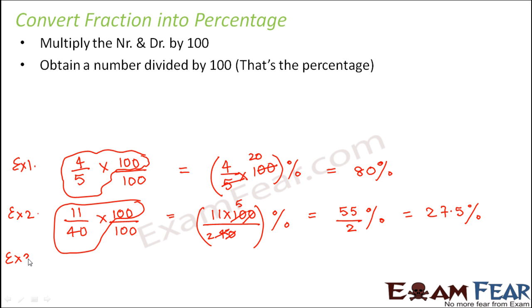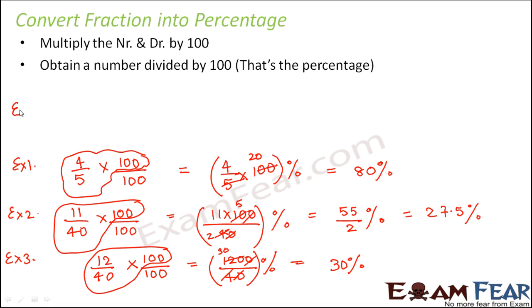Let's look at yet another example. Let's talk about 12 by 40. So in case of 12 by 40, again you multiply the numerator and the denominator by 100. So here again you leave this intact, so this is 1200 divided by 40 percent. So this becomes 30 percent.